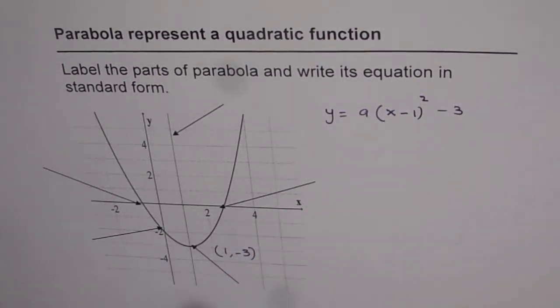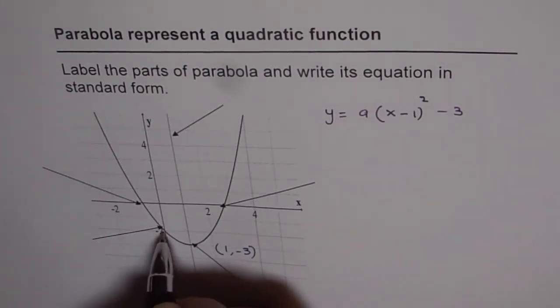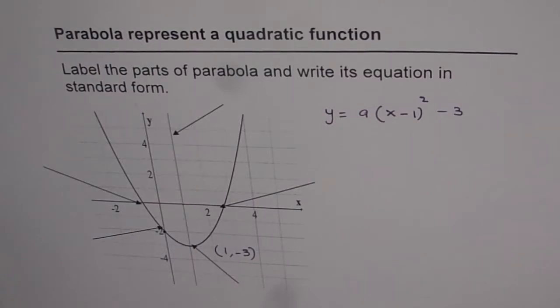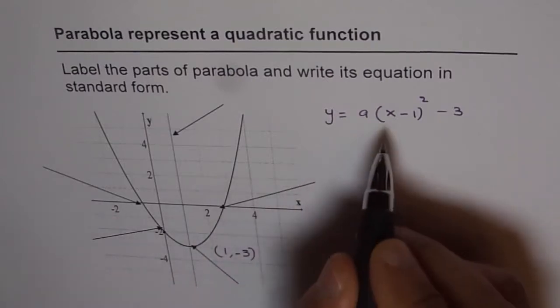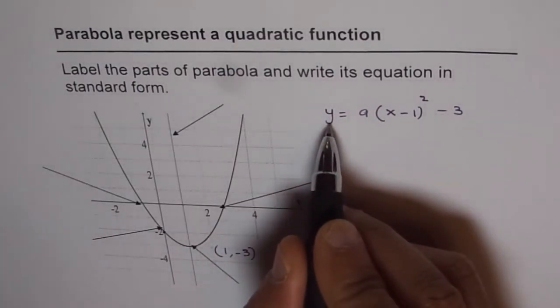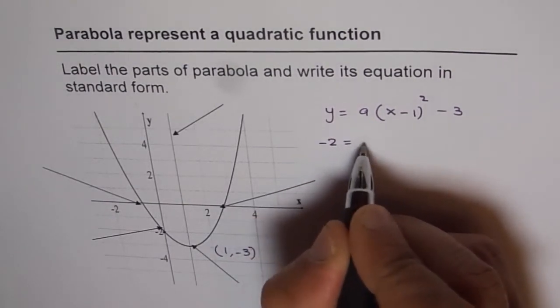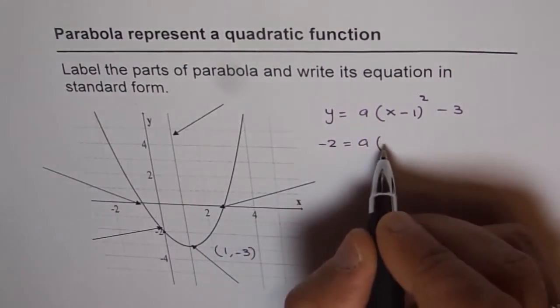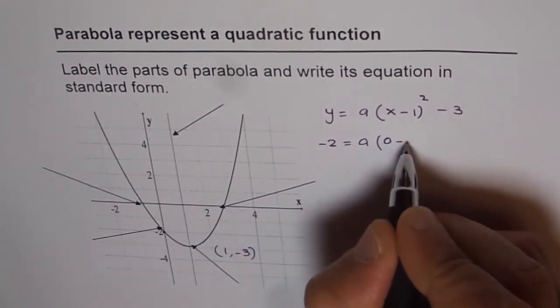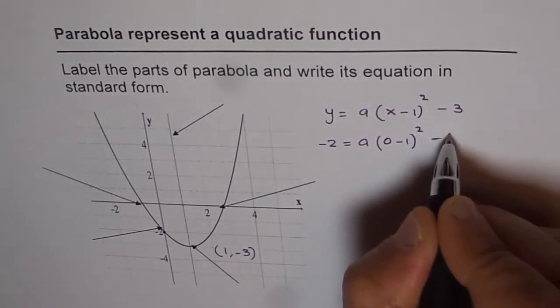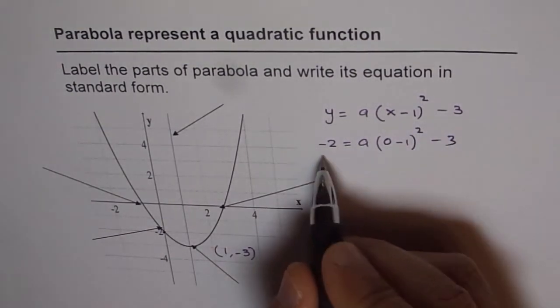Now to find the value of a, we need to look for a point which should be very clearly. This y-intercept seems to be an excellent point. So you can see this y-intercept is at minus 2. That means that x equals to 0, we have minus 2 for y. So we can write minus 2 here and then find the value of a. So x is 0 minus 1 whole square minus 3. Now we can reorganize.